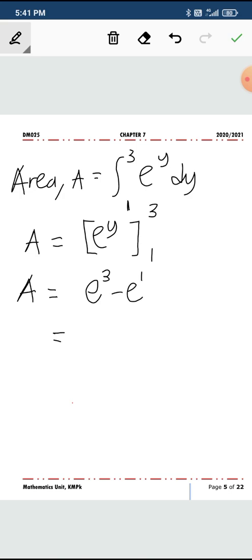This will give you e cubed minus e to the power of 1. Now you change this. Let me get this value. And when you punch in the numbers in your calculator, the value is 17.37. This is two decimal places. Do not forget your unit squared.